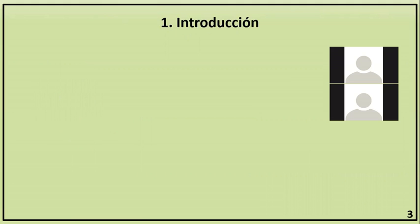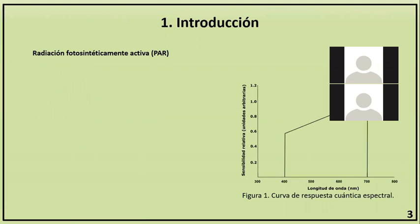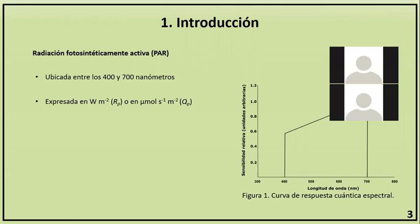Como introducción, sabemos que la radiación fotosintéticamente activa, o PAR, por sus siglas en inglés, es la radiación comprendida entre los 400 y 700 nanómetros del espectro electromagnético capaz de producir actividad fotosintética en ciertos organismos como plantas y algas. La radiación PAR puede ser expresada en términos de densidad de flujo de energía o en términos de densidad de flujo de fotones fotosintéticos.